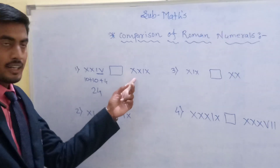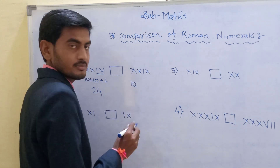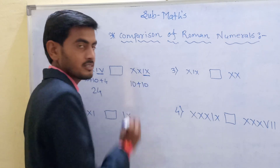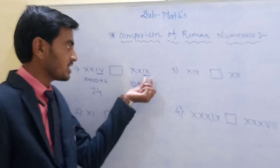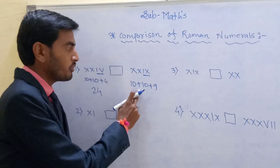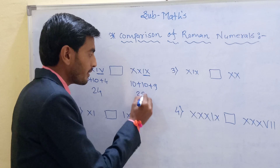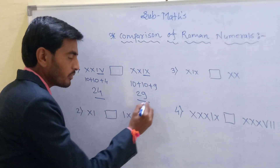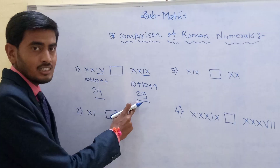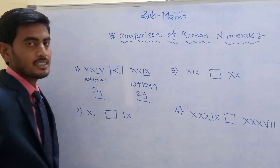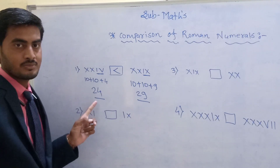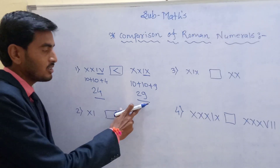Now the other number is XXIX. X means 10, another X means plus 10, and IX means 9. So 10 plus 10 plus 9 is equal to 29. Compare 24 and 29 — which one is greater? 29 is the greater number, so 29 is greater than 24. We also read this as 24 is less than 29.